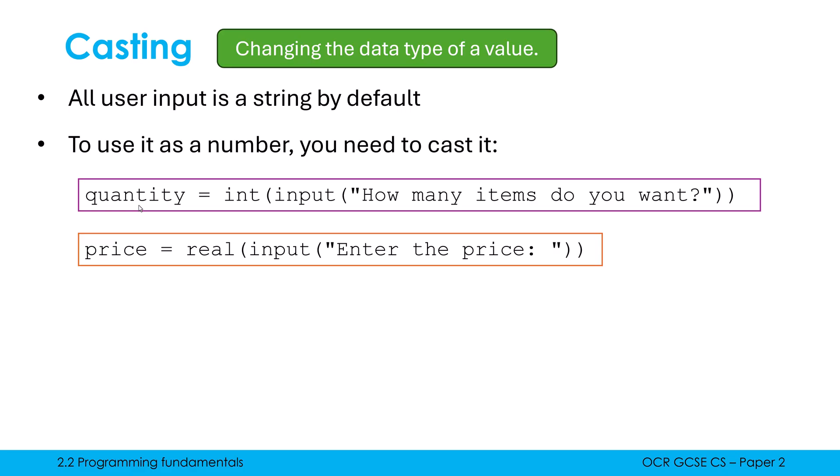To do the same with a real, I just stick the word real. So int is shorthand for integer, obviously, but real we write out. And same process, the price is probably going to be a fractional number, because we've got pence as well as pounds. And so therefore, I'm converting it to be a real. If you wanted to use the word float, like you would in Python, that's obviously fine.